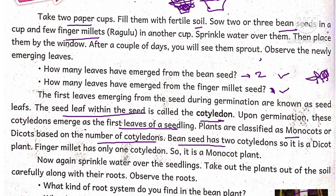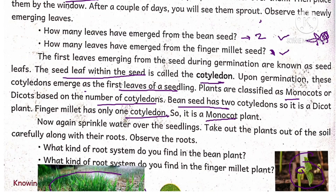The bean has two cotyledons, so it is called a dicot plant. Finger millet, wheat, and paddy have only one cotyledon, so they are called monocot plants.